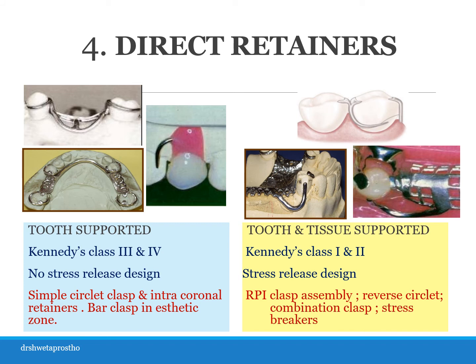Direct retention includes clasp assemblies or intracoronal retainers. For tooth supported RPDs — class 3 and class 4 cases — no stress release design is required; the stress is taken by the abutment, so rigid clasp assemblies are preferred. A simple circumferential clasp can be given in these cases, and a bar clasp can be given in aesthetic zones for less metal show. Intracoronal retainers or internal attachments are also used in class 3 cases. MCQs often mention class 5 and class 6, which are actually modifications of class 3.